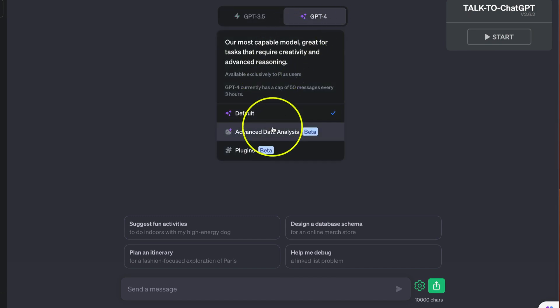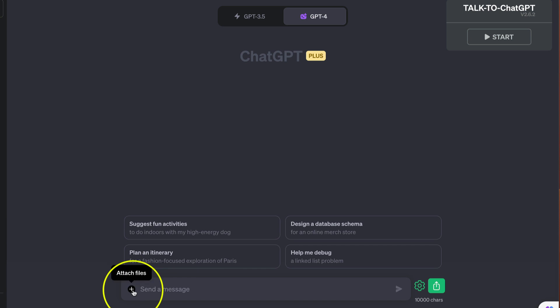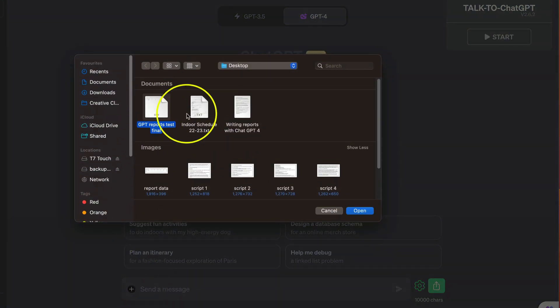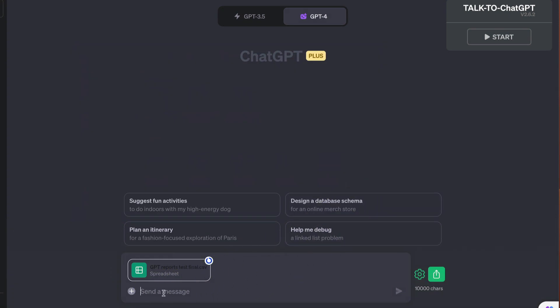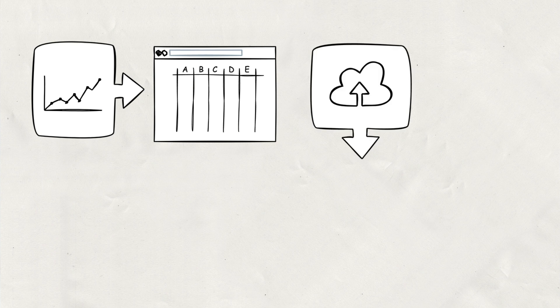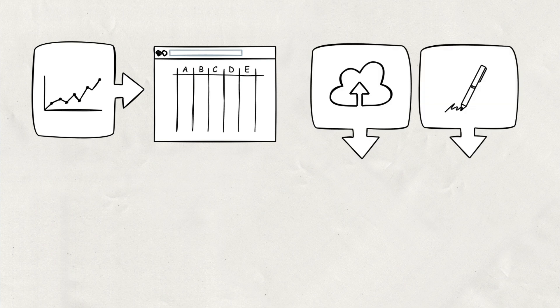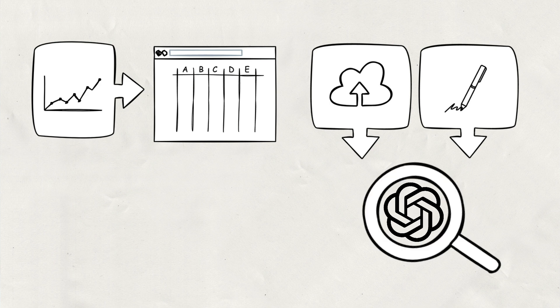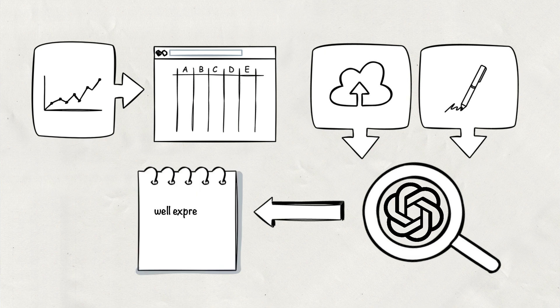When you select this mode, you'll notice that there's the opportunity to upload files, and that can be a Word document, a text file, or an image, but we're going to be making use of the opportunity to upload a spreadsheet. I'm going to begin by creating a spreadsheet with a series of data points, with each column dedicated to an element I'll be using in my report. I'm going to upload this, and I've also engineered a prompt which will tell the large language model to scrutinize the content of that spreadsheet and convert the information into well-expressed natural language prose reports. Finally, I'm going to take the output and feed it back into the model to refine the quality of the written work.